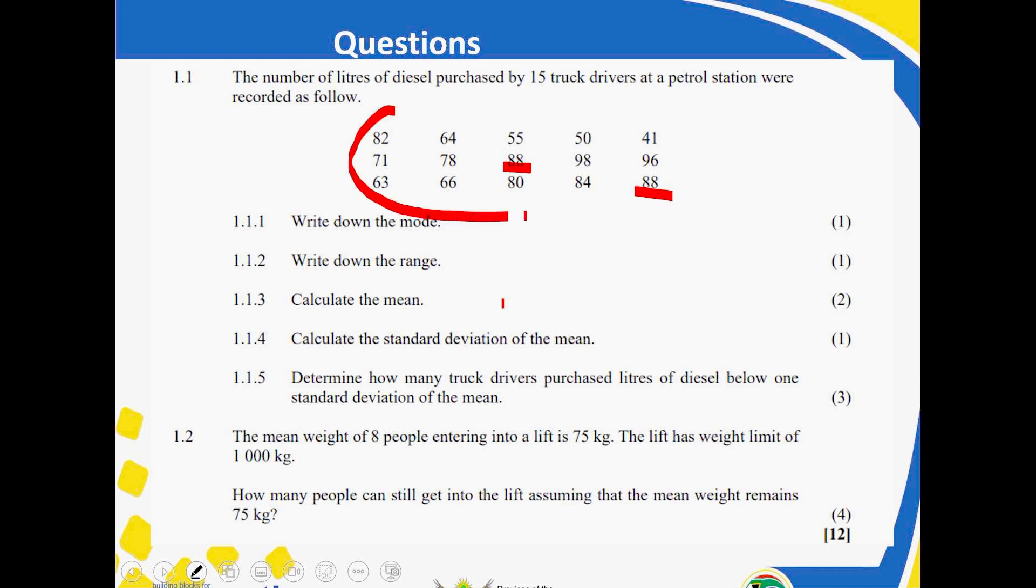Then, as for number 1.1.3, for two marks, calculate the mean. You're supposed to punch all these scores. If you can punch them in the calculator nicely, you take your time. Behave away. You can even use a pencil. Once you punch 82, you scratch it out. You punch 64, you scratch it out. 55, 50, 41, 71, 78, 88, 98. You do that as you'll be scratching and you scratch with a pencil so that you know that you have picked up all these scores.